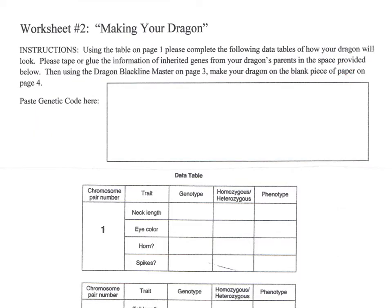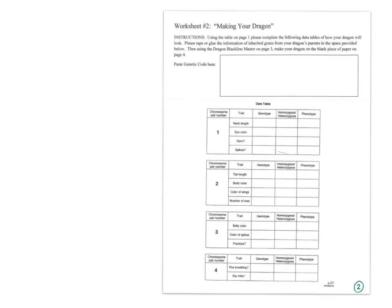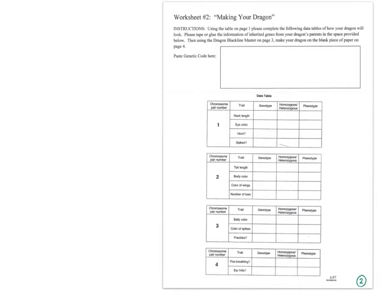Worksheet 2 has you looking at developing your genotype. Here you're making your parent — this is the parent of your cross. Your dragon is going to make babies with some other dragon from someone in your class. So you're going to take your phenotype and make your phenotype whatever that phenotype may be — having frills, long neck or short neck, what color eyes, horns or not, spikes or not. Decide if you want yours to be homozygous or heterozygous for each of these, and then decide what your genotype is.